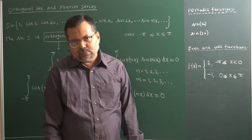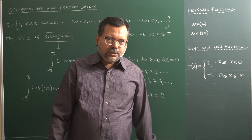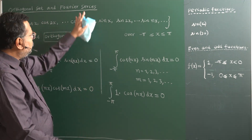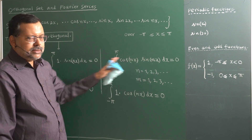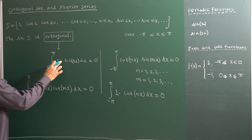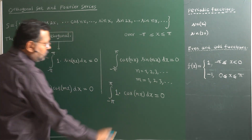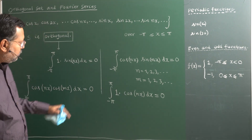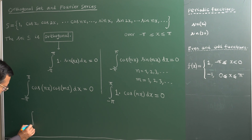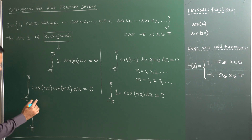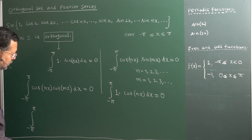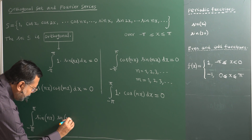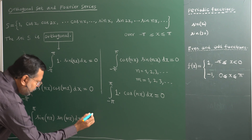The formal definition of an orthogonal set will be discussed in the second semester of mathematics, but now we are quickly entering into Fourier series. So the result is zero if you multiply and integrate. How many results do you have? You have 1, 2, 3, 4 so far. Can you write any more? Yes — cos·cos has been taken, sin·sin has not been done yet. So you can also write: integral from minus pi to plus pi of sin(nx) times sin(mx) dx equals zero.